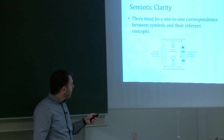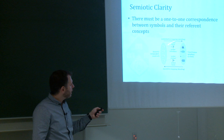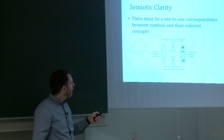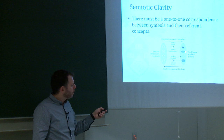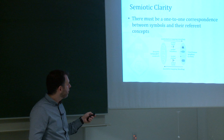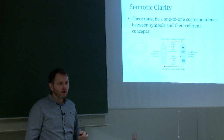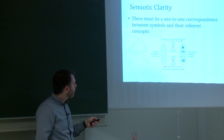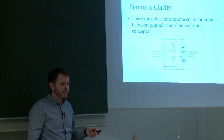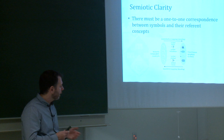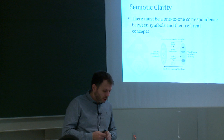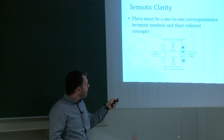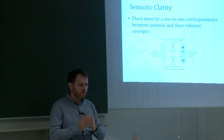If a concept has no symbol, that's a symbol deficit — we cannot instantiate that concept graphically. Symbol redundancy occurs when the same concept has two different representations, creating confusion. Symbol overload — which we had in our language — means more than one concept maps to the same symbol, like a rectangle. Symbol excess means something in the diagram doesn't correspond to any concept in the modeling language. The goal is a clear one-to-one mapping between concepts and diagram elements.